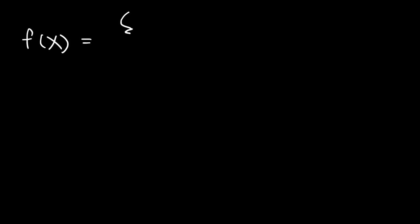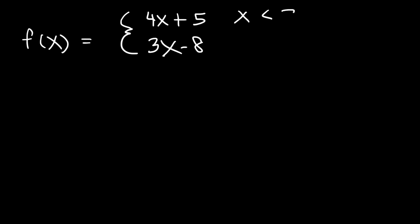In this lesson, we're going to focus on evaluating piecewise functions. A piecewise function is a function that can be broken up into many parts. This particular piecewise function can be equal to 4x plus 5 or 3x minus 8, depending on the x value. It's equal to 4x plus 5 when x is less than 2, and equal to 3x minus 8 when x is equal to or greater than 2.